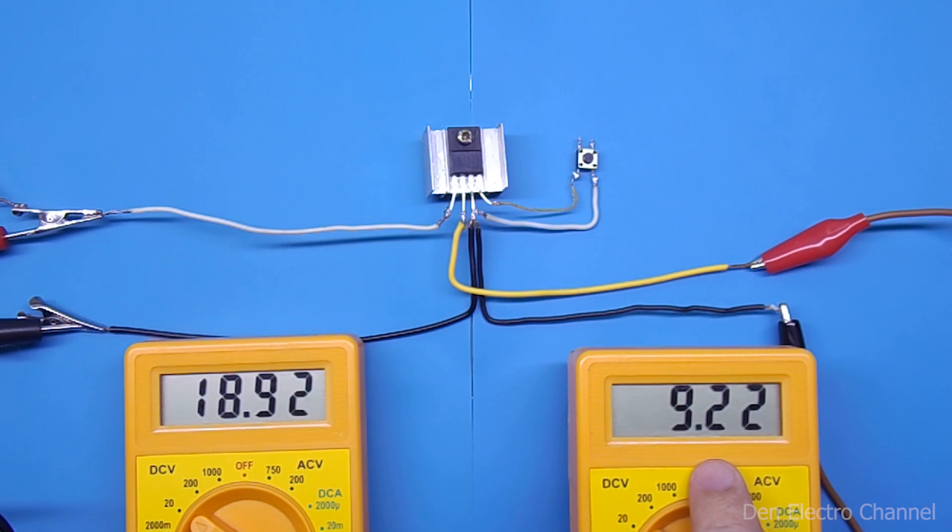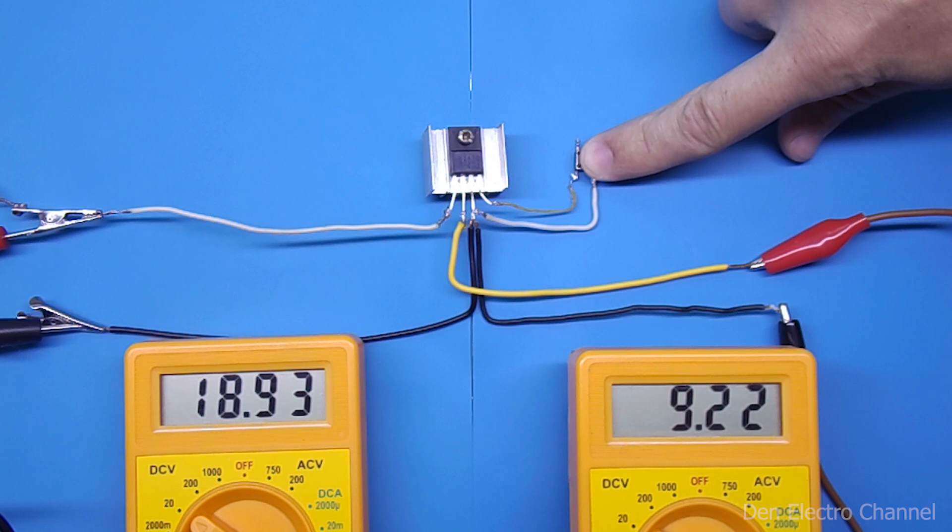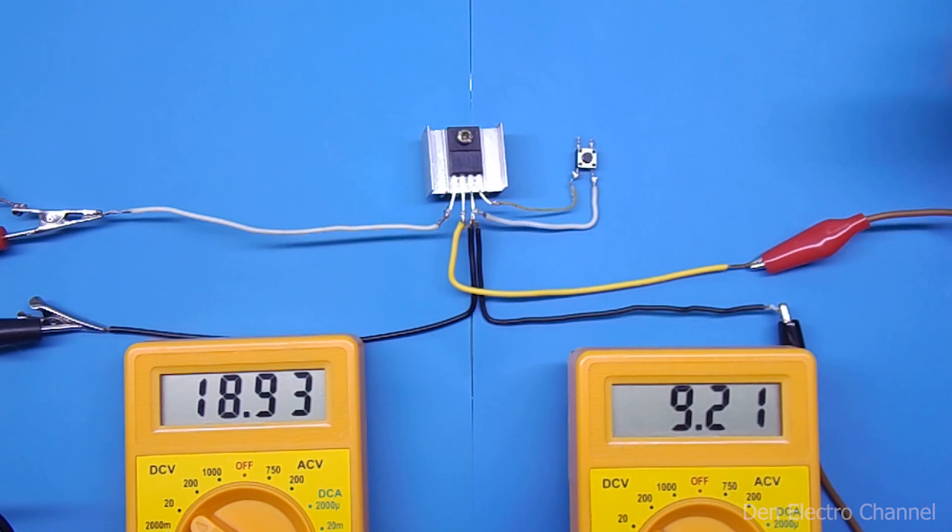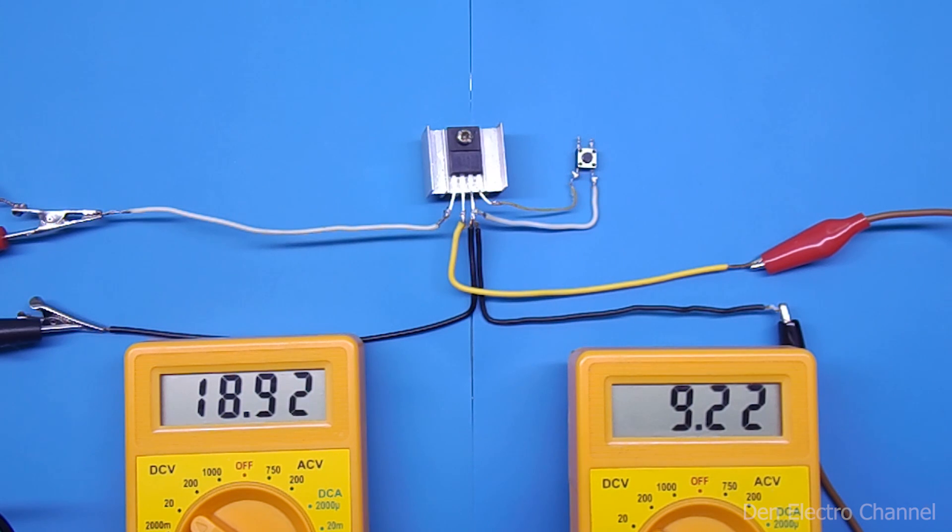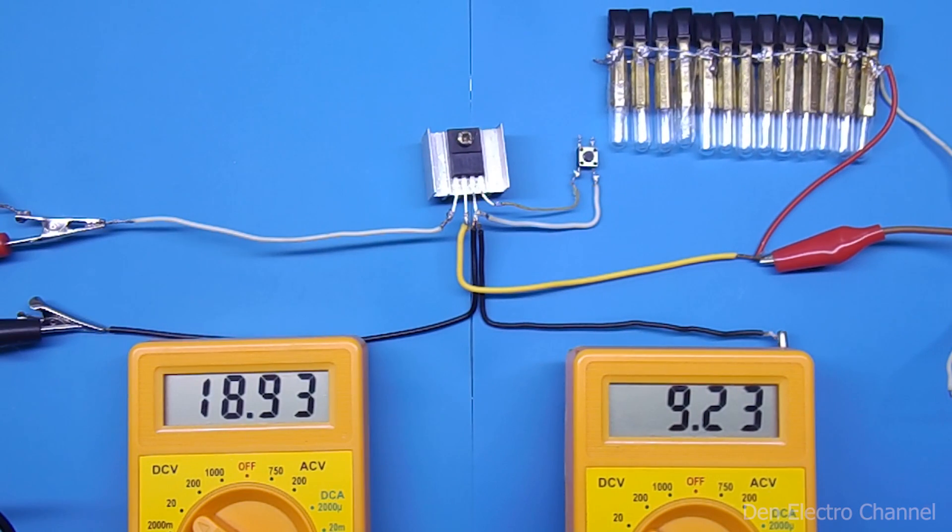The output of the microcircuit is now open, since the fourth pin is hanging in the air. But by pressing the small button I will apply a minus signal and the microcircuit will turn off. If the button is released, the voltage is restored.